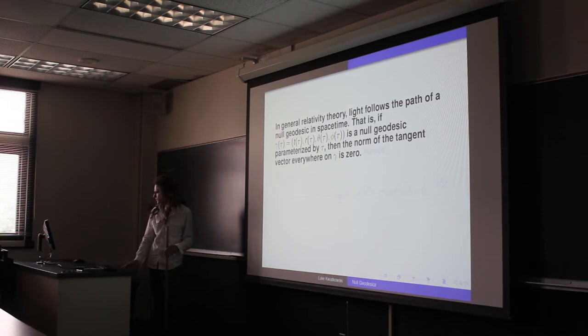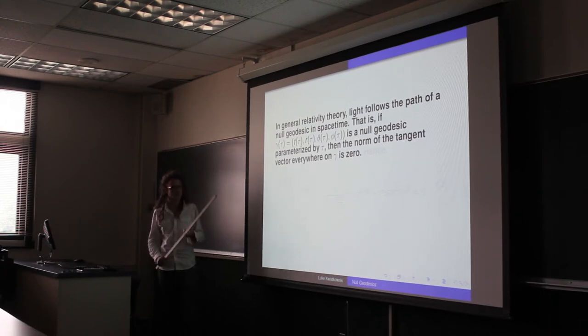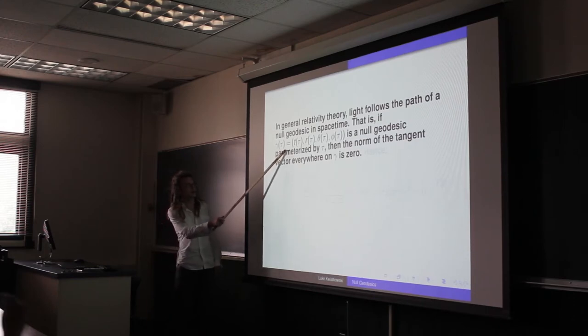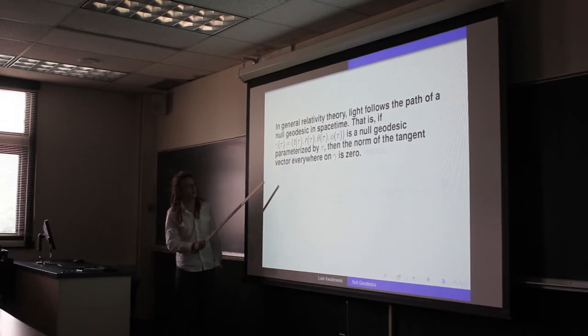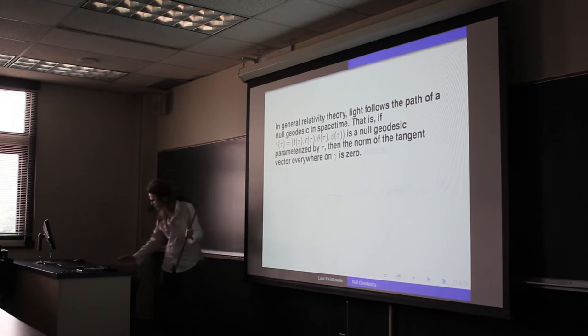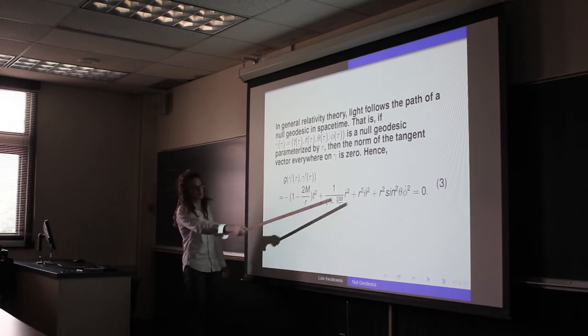So what is a null geodesic? That's what we're doing. It's a curve whose tangent vectors everywhere, the norm of the tangent vectors everywhere is zero. So light follows a null geodesic. So we have a curve parameterized by tau in this coordinate system, which is spherical. And so we take the inner product here, we force it to be zero.